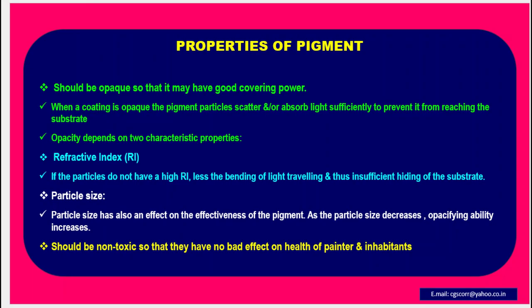Properties of pigment: It should be opaque so that it may have good covering power. When a coating is opaque, the pigment particles scatter or absorb light sufficiently to prevent it from reaching the substrate. Opacity depends on two characteristic properties: refractive index — if the particles do not have high refractive index, less bending of light occurs, resulting in insufficient hiding of the substrate; and particle size — as particle size decreases, opacifying ability increases. Pigments should be non-toxic so they have no bad effect on the health of the painter and inhabitants.